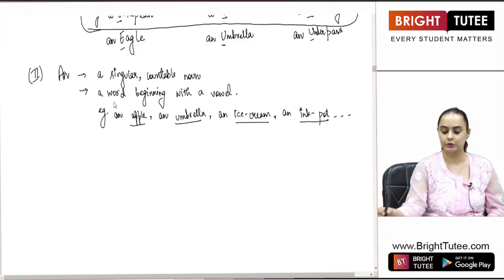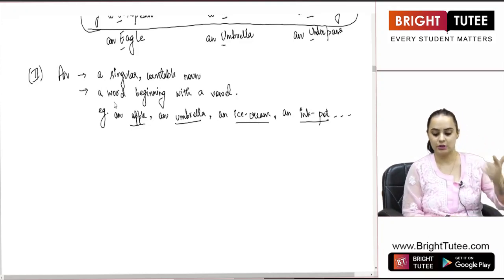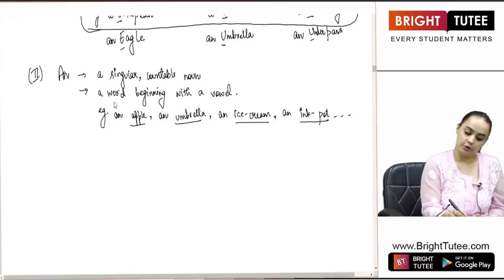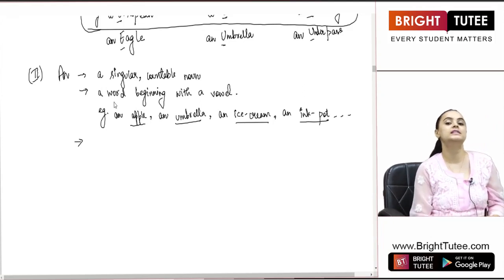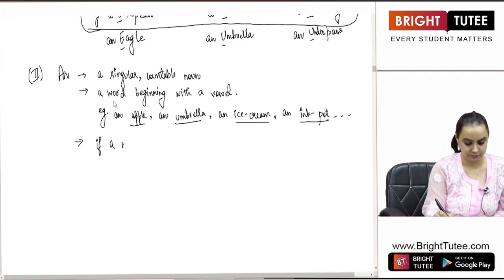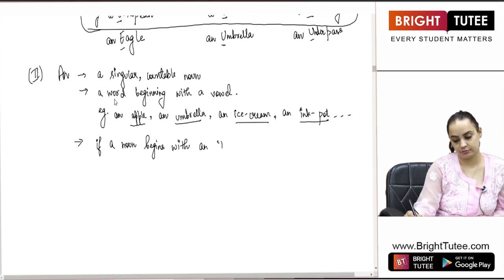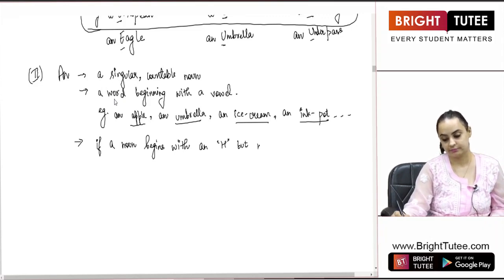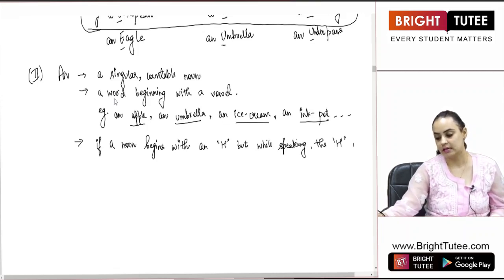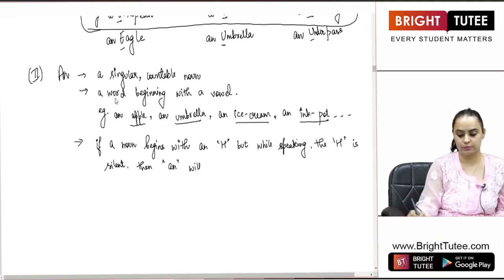Just like A, we have exceptions in AN as well. If a noun begins with H, but while speaking that H is silent, then AN will be used before it. H is a consonant, not a vowel. But there are words that begin with H where, when spoken, the H is silent and what you hear instead is the vowel sound at the beginning. For example, 'hour' — when you speak this word, do you hear the H sound? We don't say 'hour' with a hard H; the first sound is 'A', which is a vowel, so: AN hour.